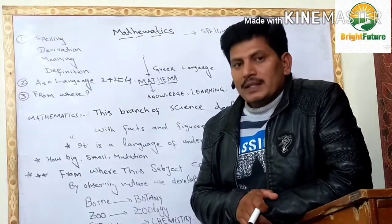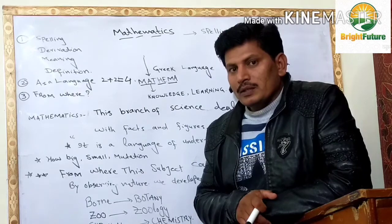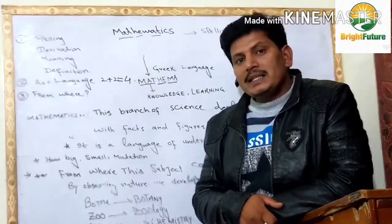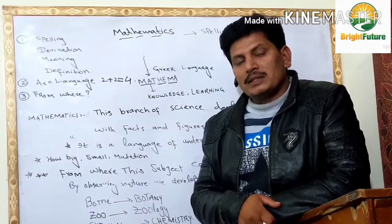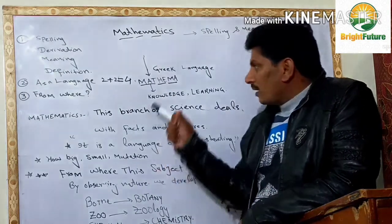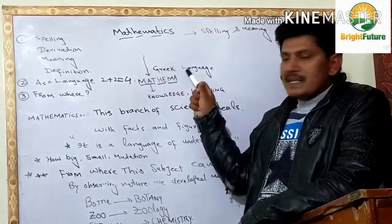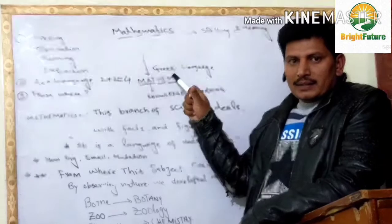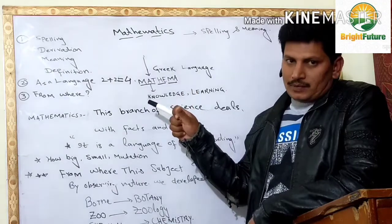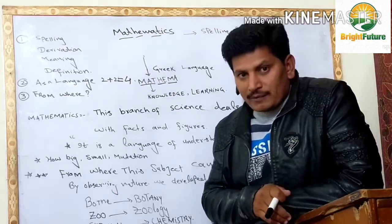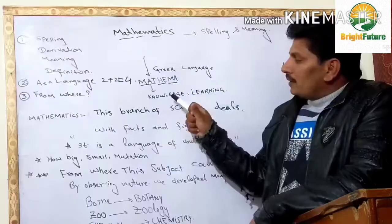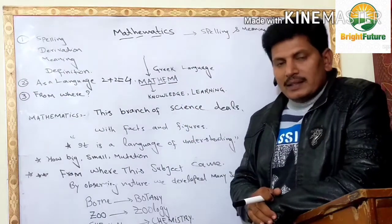Now the question is, what is the derivative of mathematics? Mathematics is a Greek word which is derived from the word mathema, which came from the Greek language. The word from which mathematics came from is mathema, and mathema means knowledge and learning.